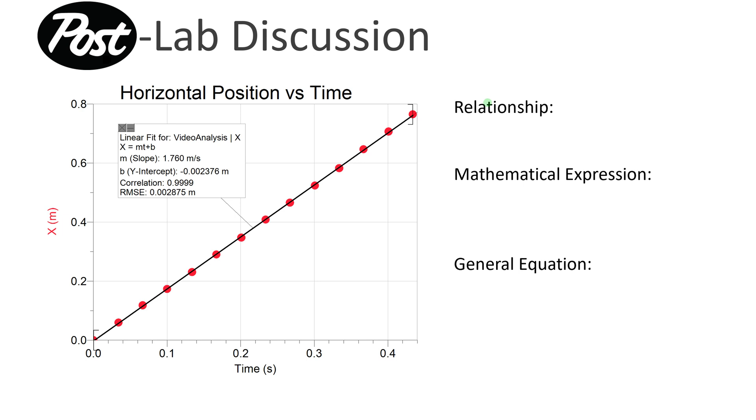So here we have x versus t, the horizontal position versus time graph. So you're going to print this graph out with the line of best fit for your analysis section and hopefully it's very easy for you to see that this is a linear relationship between position and time. The mathematical expression with my data is going to be x equals, and then we take a look at our slope, 1.76, I'll just do 1.76 meters per second times t plus, now we look at the y intercept. Do I add negative 0.002376 meters?